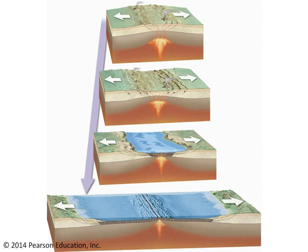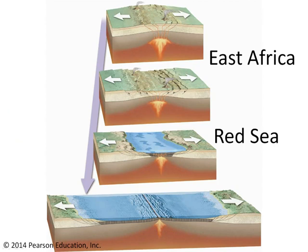If you were to look for modern examples of these different stages of divergence, East Africa is probably the best example of the first stage, where we've got rifting of continental lithosphere. The Red Sea region between Africa and Arabia is a nice example of the initiation of seafloor spreading, and then the Atlantic Ocean is the classic example with a mid-ocean ridge located exactly halfway across the ocean basin.